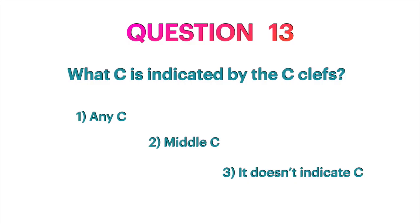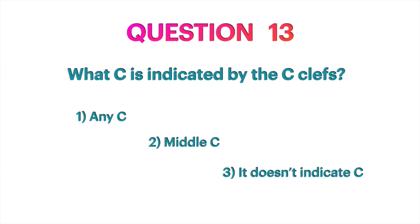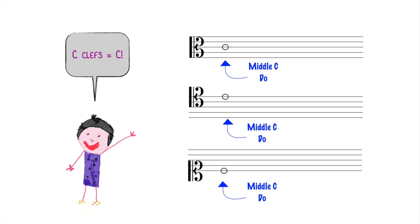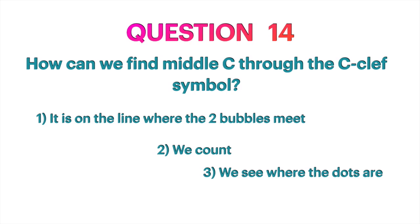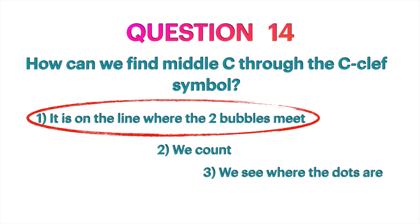Question 13: What C is indicated by the C clefs? Middle C. Three clefs on three different lines for the same note — middle C. Question 14: How can we find middle C through the C clef symbol? It is on the line where the two bubbles meet. If you want to revise this, watch the video on C clefs.